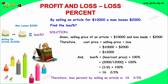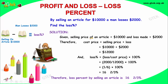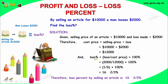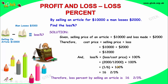By selling an article for $10,000, a man incurs a loss of $2000. Find the loss percentage. The selling price is $10,000 and the loss is $2000. The cost price is equal to selling price plus loss. The loss percentage is $2000 divided by the cost price into 100, which gives us 16 and 2/3 percent.